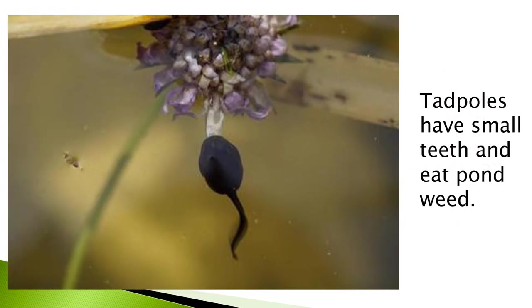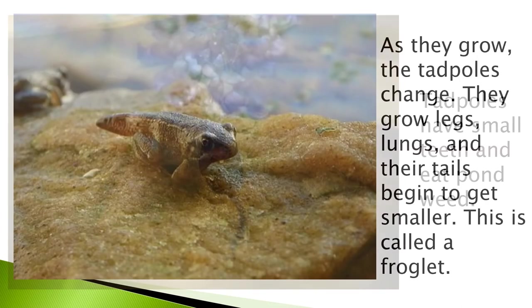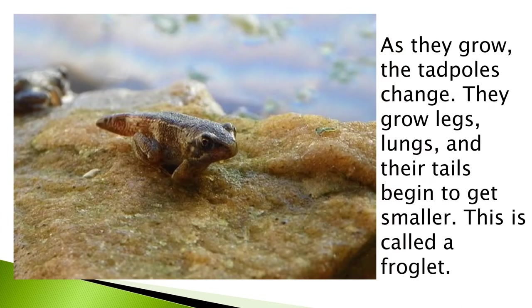Tadpoles have small teeth and eat pond weed. As they grow, the tadpoles change. They grow legs and lungs, and their tails begin to get smaller. This is called a froglet.